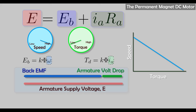One thing about PMDC motors is that the torque is limited by the field — we can't change the field — but they are cheaper than wound DC motors. Moving on to wound DC motors, the first is the separately excited DC motor. In many ways this is very similar to the PMDC motor, with the notable difference that we can now vary the field strength by varying the field current.